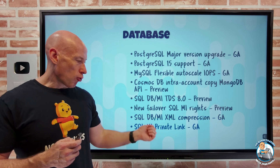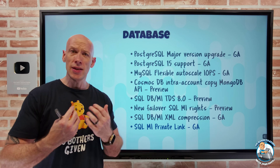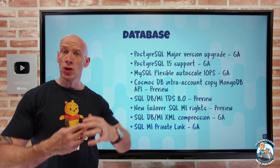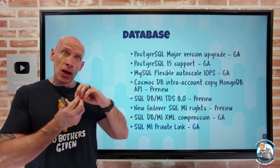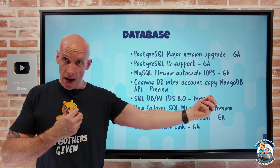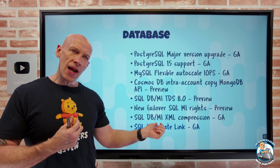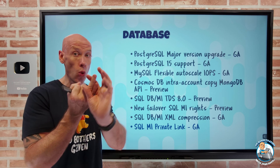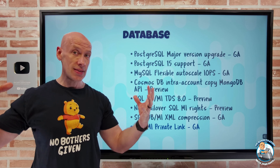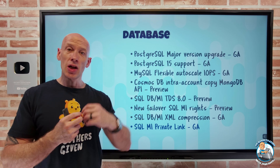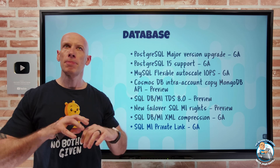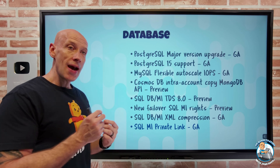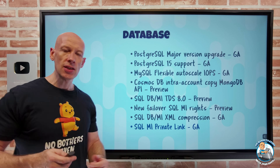SQL Managed Instance private link has gone GA. Ordinarily, SQL Managed Instance deploys into your virtual network, so you're using a private IP from your VNet to talk to it. You might ask why you'd want a private endpoint — but imagine a scenario where you want to use this managed instance from another virtual network and you can't or don't want to peer. Peering is a fairly broad connectivity method and gives you a certain amount of knowledge about the other network, whereas private link obfuscates much of that, and lets you say you just want this particular port exposed. So now if you can't or don't want to peer, you can still get connectivity to a SQL Managed Instance.